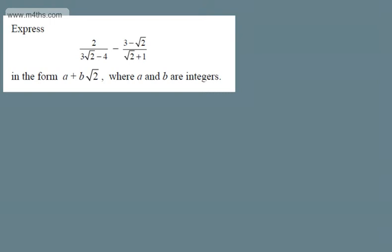In this video, we're going to do an extension question on surds. We're asked to express 2 over the quantity 3 root 2 minus 4, minus 3 minus root 2 over the quantity root 2 plus 1, in the form A plus B root 2, where A and B are integers.